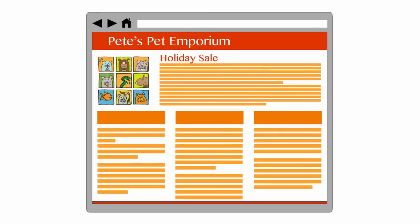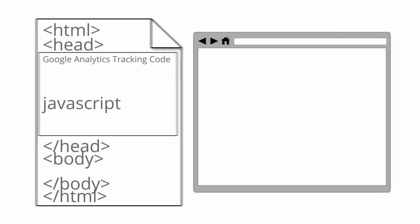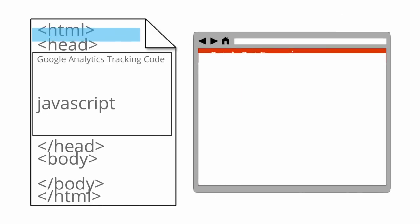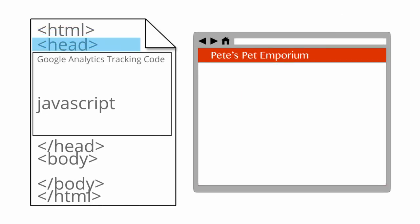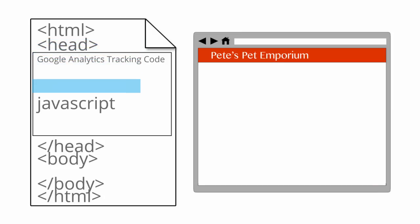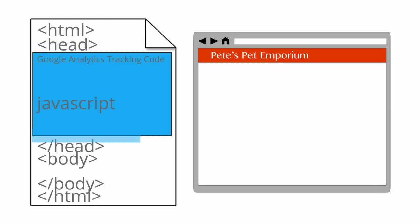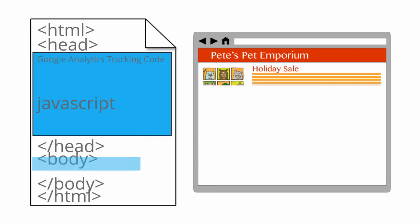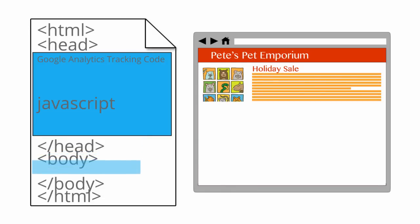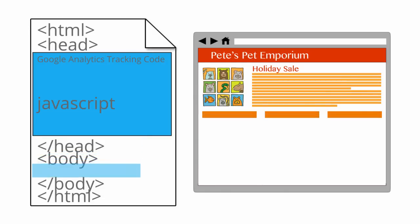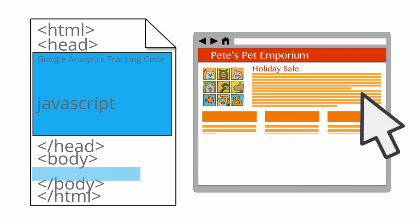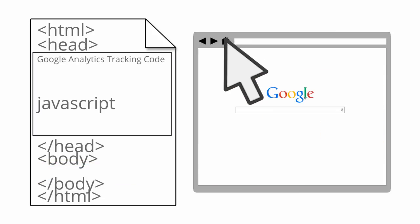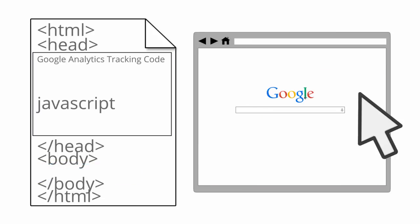When a user views a page on your site, the web browser begins to render the HTML on the page. It starts at the top of the page and moves towards the bottom. When it gets to your Google Analytics tracking code, the browser automatically triggers the JavaScript. Adding the code snippet to the top of the page before the closing head tag ensures that the Google Analytics code runs even if a user navigates away from the page before it fully loads.